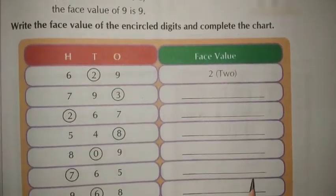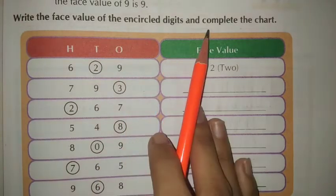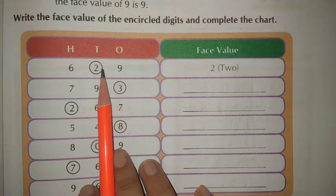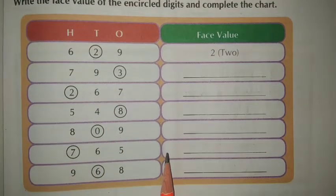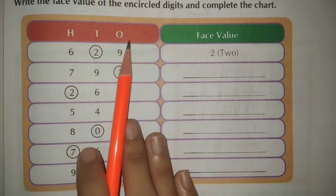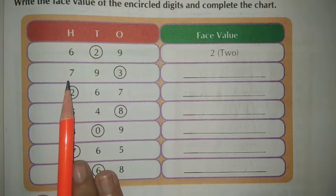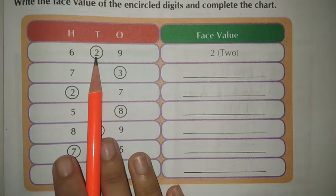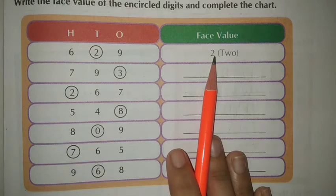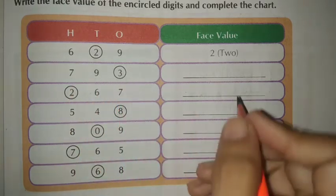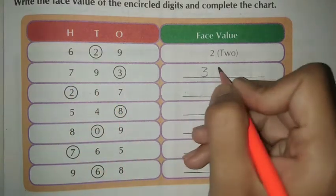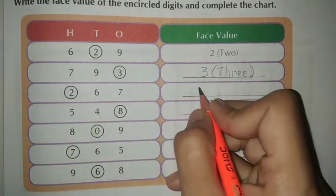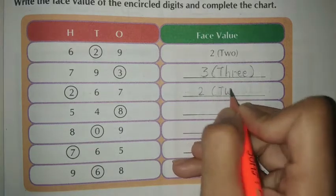Let's see examples. Write the face value of the circled digit and complete the chart. The actual value — we don't depend on the hundreds, tens, or ones chart for face value. 629 — circle on 2, face value is 2. 793 — face value is 3. 267 — circle on 2, so write 2.